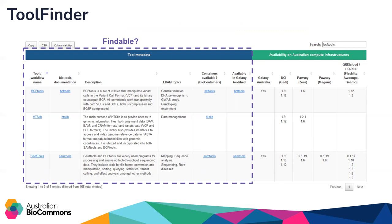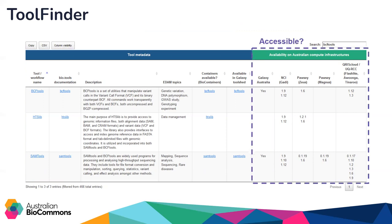Tool Finder is split between tool metadata, which really addresses findability — the F in FAIR — and the availability of specific versions of tools across Australian national compute infrastructures, addressing that accessibility aspect.